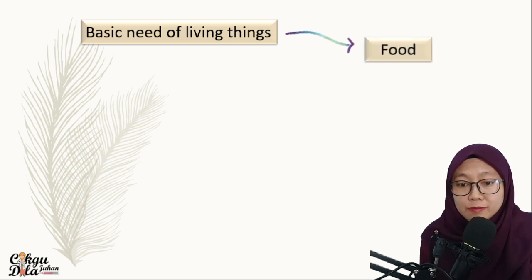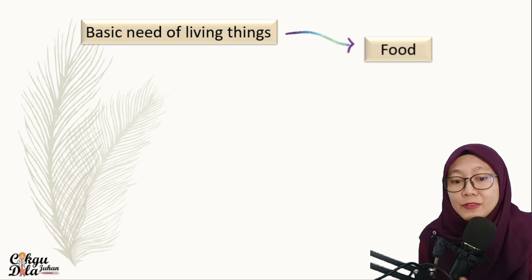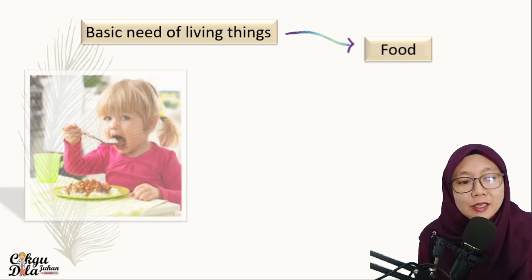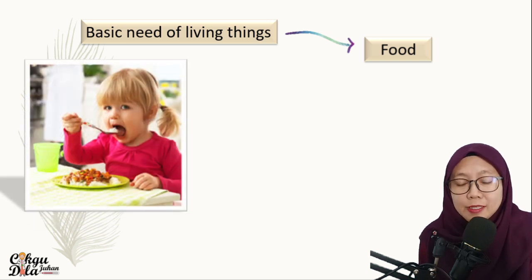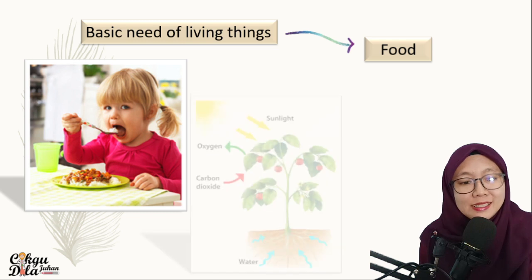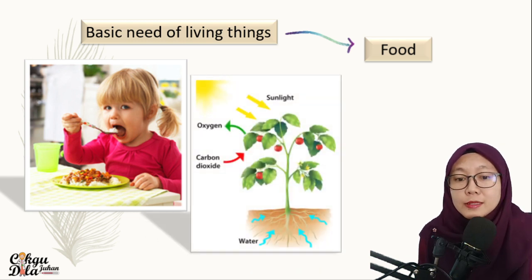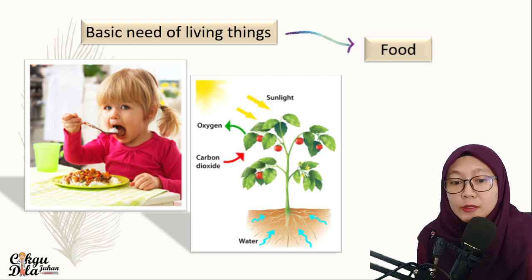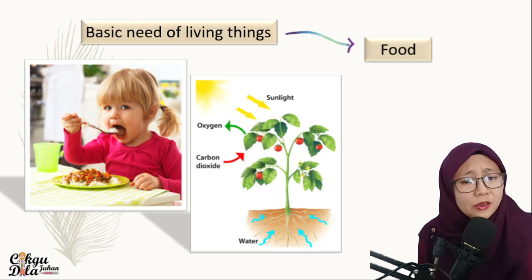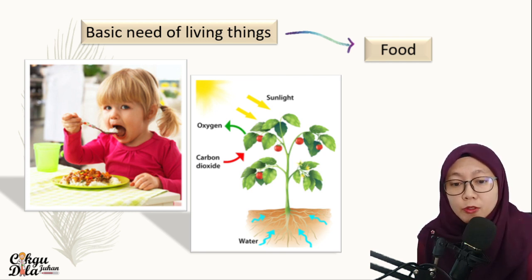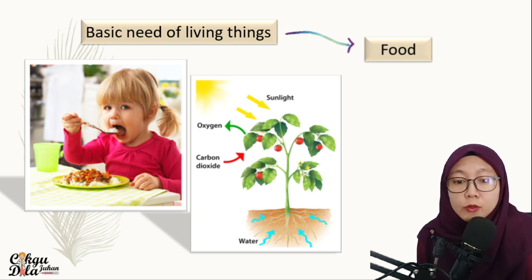We need food, especially food, because we eat every day. So instead of humans, plants also need food. But how do they get food? They get food from the photosynthesis process. So plants make their own food.